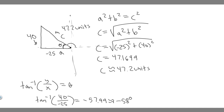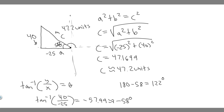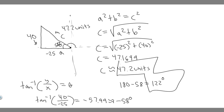So that reference angle is 58 degrees. Since this whole angle is 180 degrees, we subtract: 180 minus 58 equals 122 degrees. So this angle right here is 122 degrees, which is essentially the direction. The direction is 122 degrees and the magnitude is 47.2 units. So these are your two answers — hopefully you found this useful.